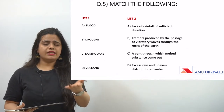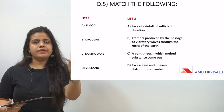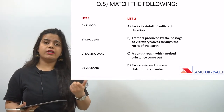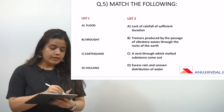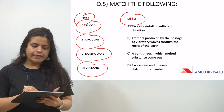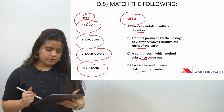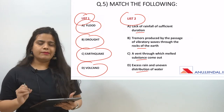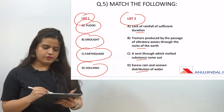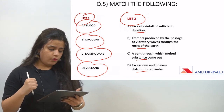The fifth question is a List 1–List 2 matching type, which is very common in UGC NET exams. List 1 gives natural hazard names: flood, drought, earthquake, and volcano. List 2 gives their definitions. For flood, we look for a definition involving water — specifically 'excess rain and uneven distribution of water', since flood involves excess water.